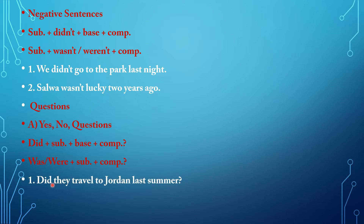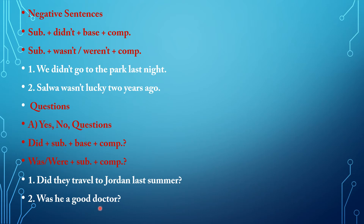For example: Did they travel to Jordan last summer? Did is the auxiliary, followed by the subject they, the base verb travel, to Jordan last summer is the complement. Was he a good doctor? Was is verb to be, followed by the subject he; a good doctor is the complement of the question.